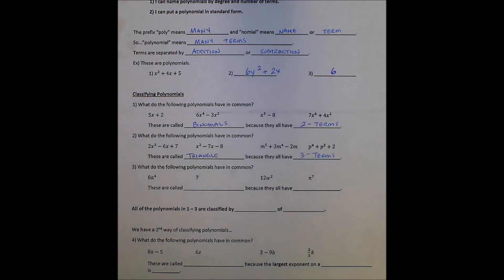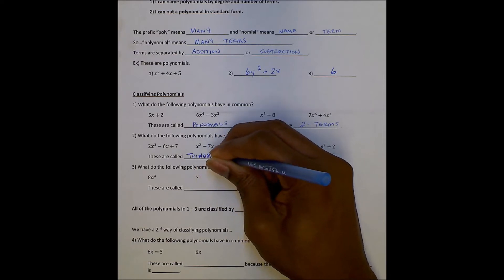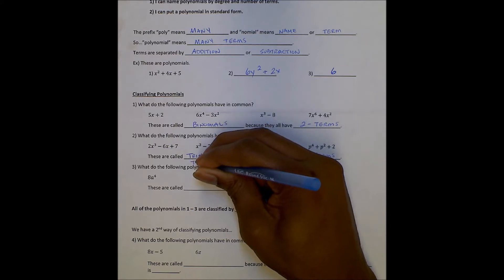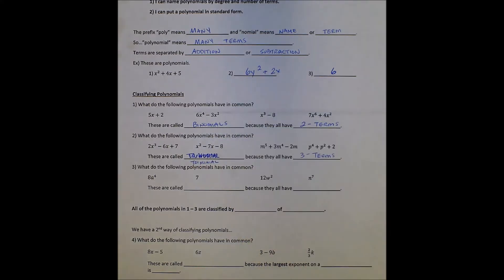I said triangle because I was thinking triangle. It's called trinomial. Trinomial, sorry guys. I should probably just rewrite that. Trinomial, with no space in between there.